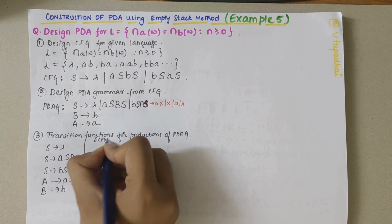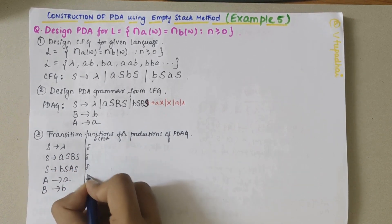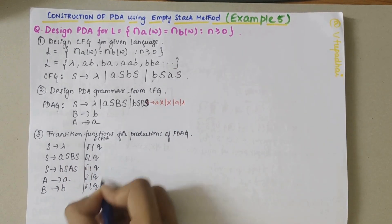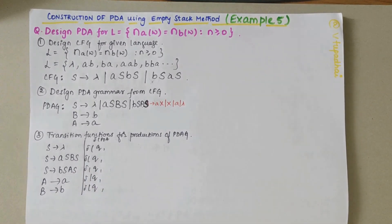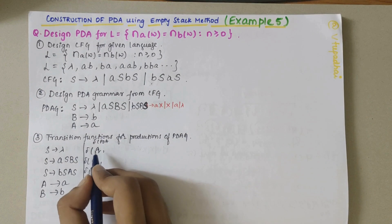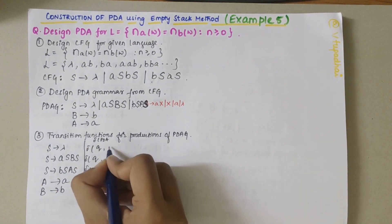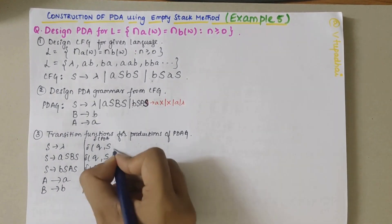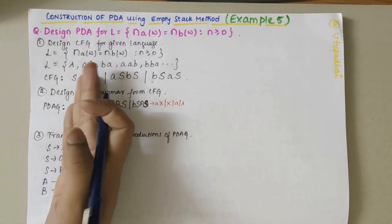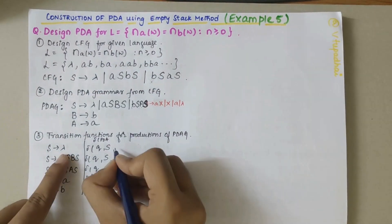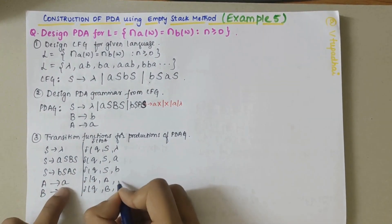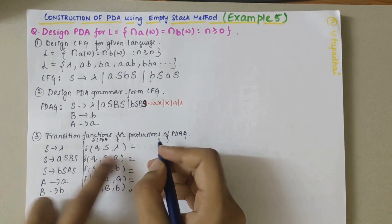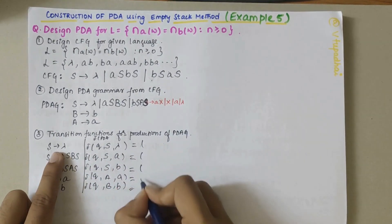We need to remember that in case of the empty stack method, we would be in the same state. Here I consider whatever is on top of the stack: S, S, S, A, and B respectively. For the input string, whatever is first in the input string: lambda, A, B, A, and B for each production.